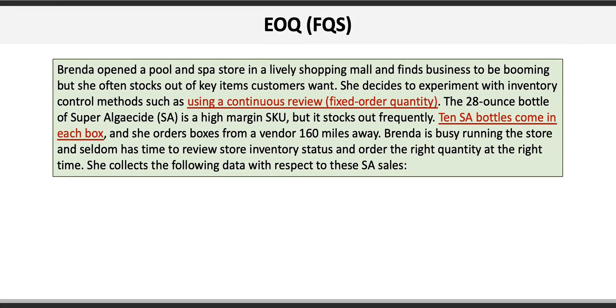Brenda opened a pool and spa store in a shopping mall and finds business to be booming, but she often stocks out of key items. She decides to experiment with inventory control methods including a fixed order quantity system. The 28-ounce bottle of Super Algaecide is a high margin SKU, but it stocks out frequently.